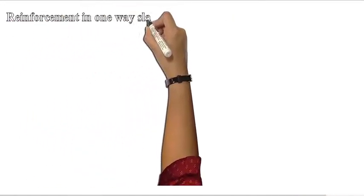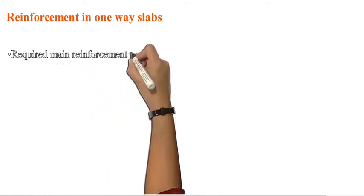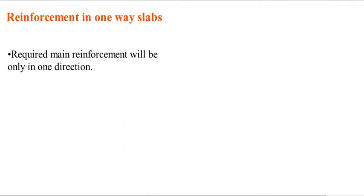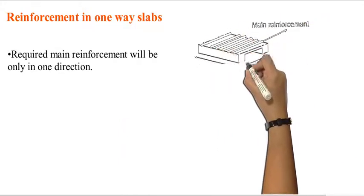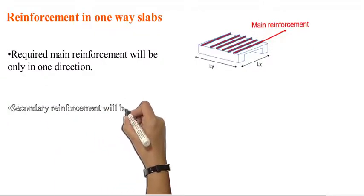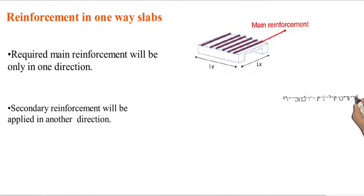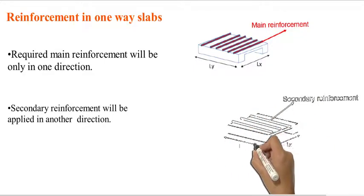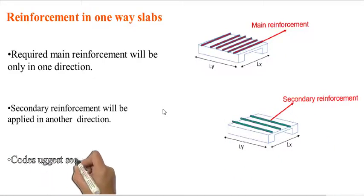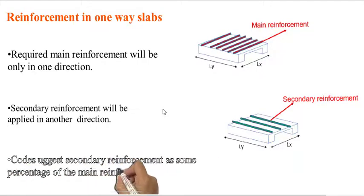Reinforcement in one-way slabs: because deflection is in one direction, the required main reinforcement will be only in one direction — in this case, only in the shorter direction. However, to control cracks, secondary reinforcement will be applied in the other direction, in this case in the longer direction. The code suggests secondary reinforcement as some percentage of the main reinforcement.